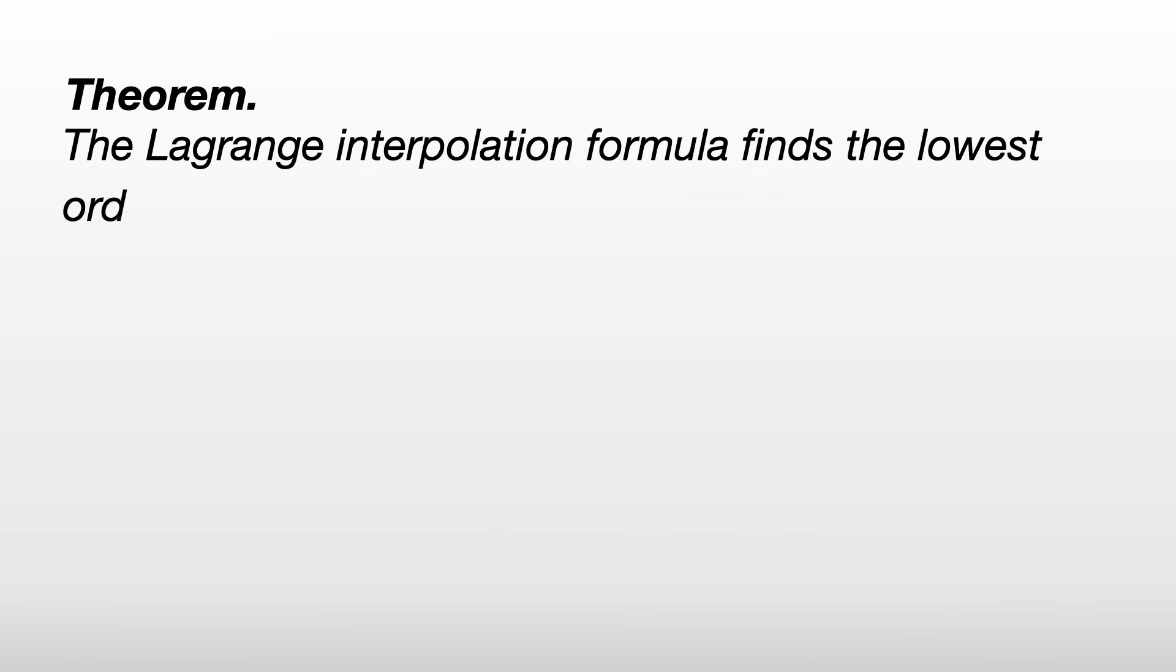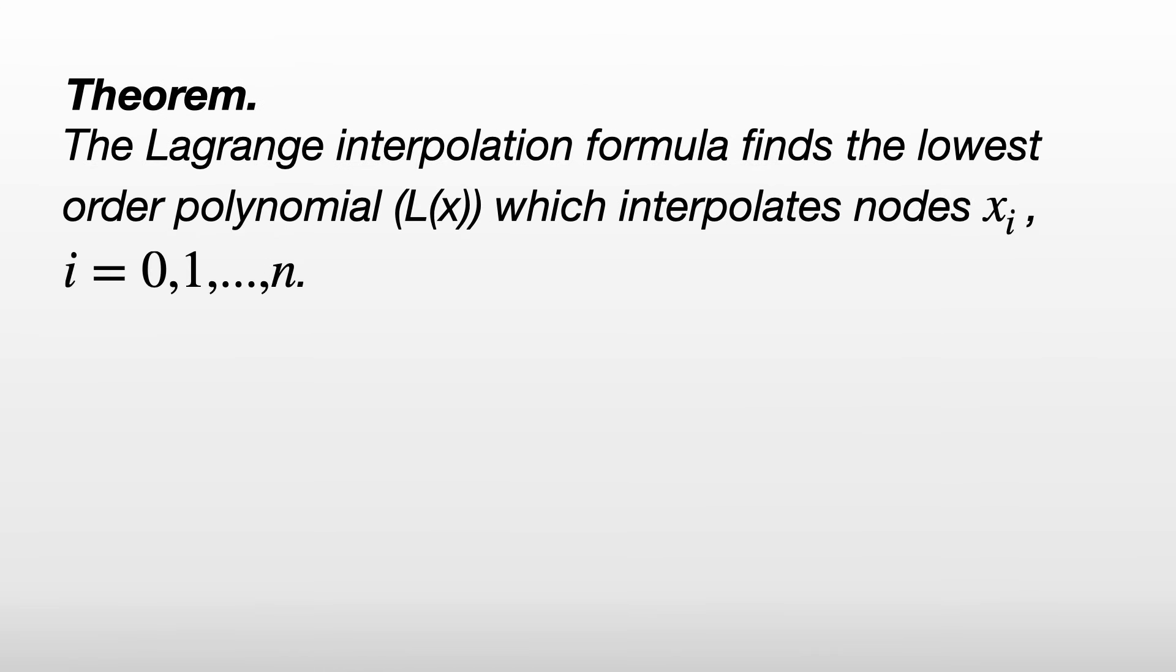What does this mean? It means that the Lagrange interpolation formula finds the lowest order polynomial L(x) which interpolates nodes x_i. We've proved this already.